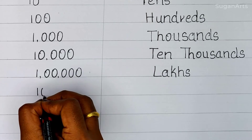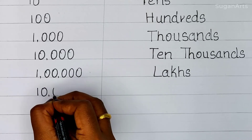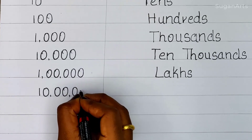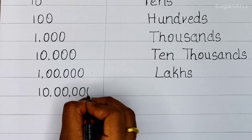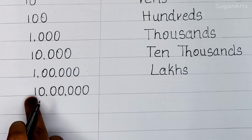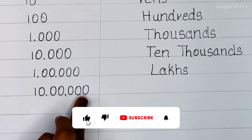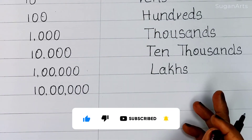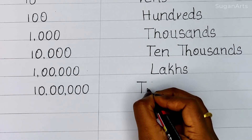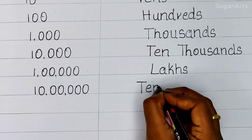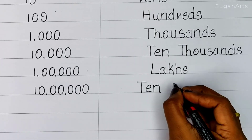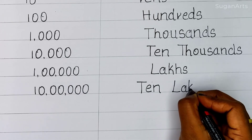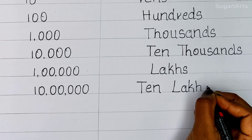So next, 1 0 0 0 0 0 0 — that is 6 zeros. In the Indian system we call it as 10 Lakh. T-E-N L-A-K-H-S. Ten Lakh.